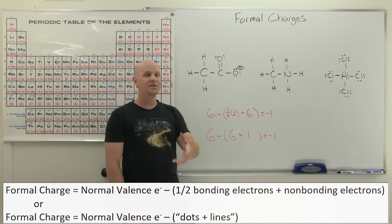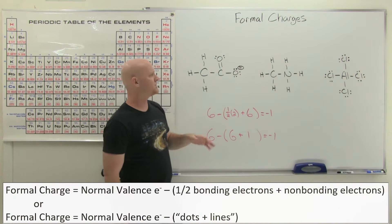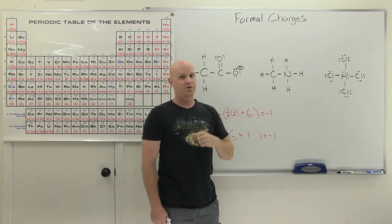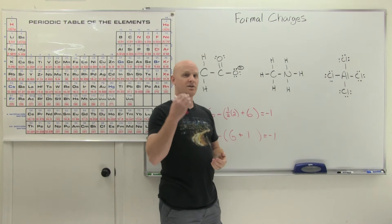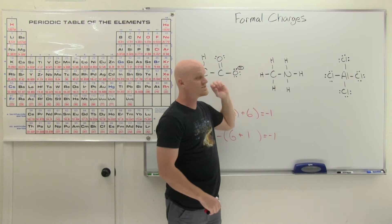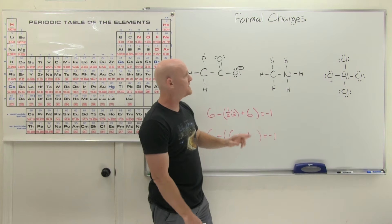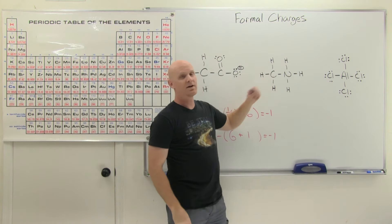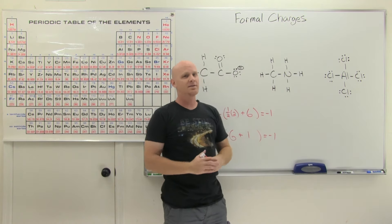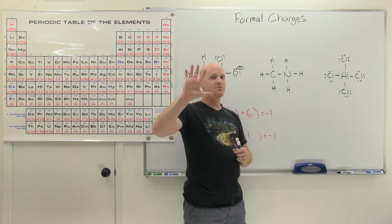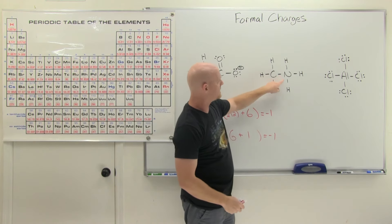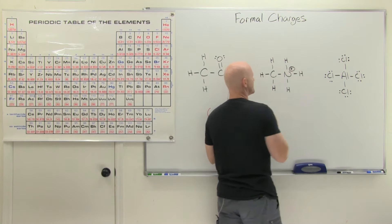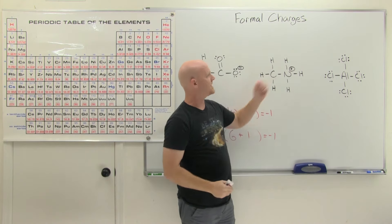In the second example, carbon is making four bonds — his typical number — so his normal valence four minus four lines is zero, no formal charge. But nitrogen has five valence electrons and usually makes three bonds; this one is making four. That should clue you in that it has a formal charge. Its normal valence is five, minus four lines and no dots — five minus four is plus one. So it has a positive formal charge.